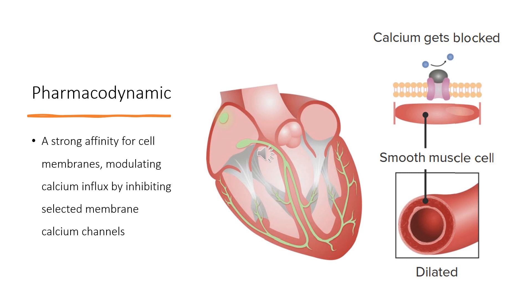Since arterial smooth muscle depolarizations are longer in duration than cardiac muscle depolarizations, inactive channels are more prevalent in smooth muscle cells. Alternative splicing of the alpha-1 subunit of the channel gives felodipine additional arterial selectivity. At therapeutic subtoxic concentrations, felodipine has little effect on cardiac myocytes and conduction cells.